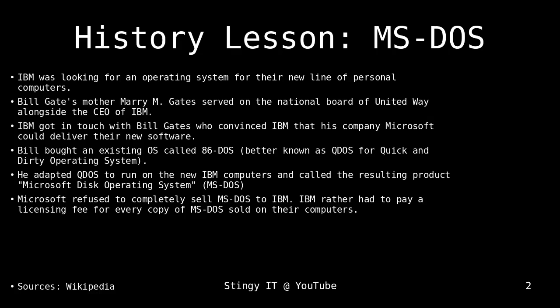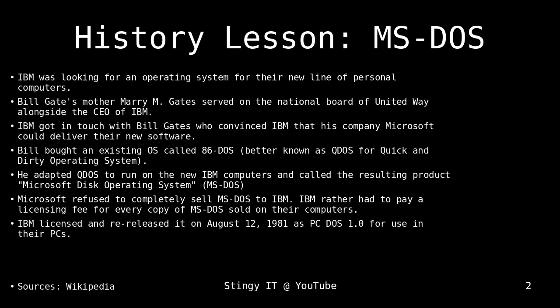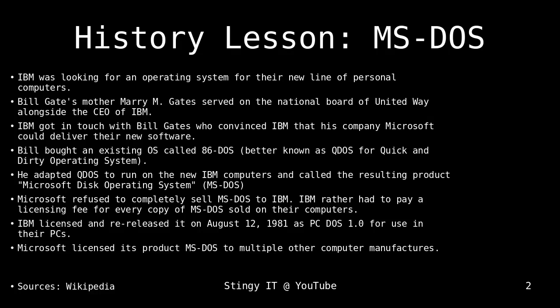Microsoft refused to completely sell MS-DOS to IBM. They just wanted to license it, so whenever IBM sold a personal computer with MS-DOS, they had to pay a licensing fee to Microsoft for each computer running MS-DOS. IBM called it PC-DOS when running on their computers, but it was basically the same system, and the first release was on August 12, 1981. Microsoft also licensed MS-DOS to multiple other computer manufacturers, meaning that whenever a computer running MS-DOS was sold, Microsoft was earning money.